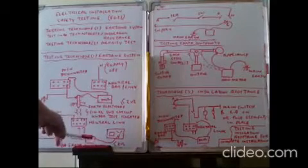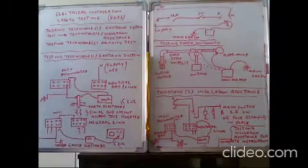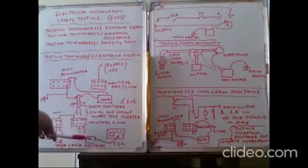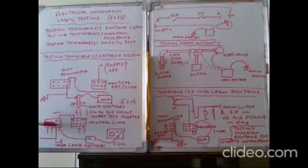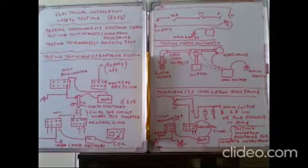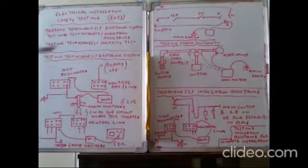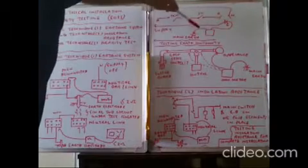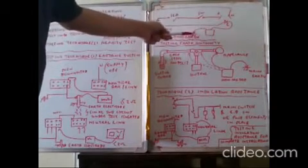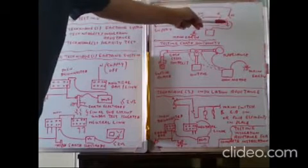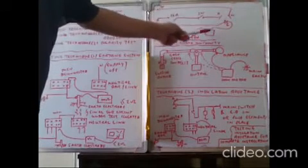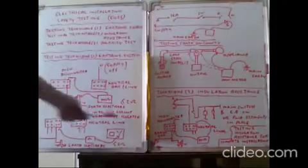Connect the ohmmeter: one terminal to the switch socket outlet, another terminal to the earth. The earthing system resistance must be low. This simplified diagram shows the neutral wire, active wire, and earth path. The ohmmeter is connected from the main connection to the socket outlet. The resistance must be less than 2 Ω.